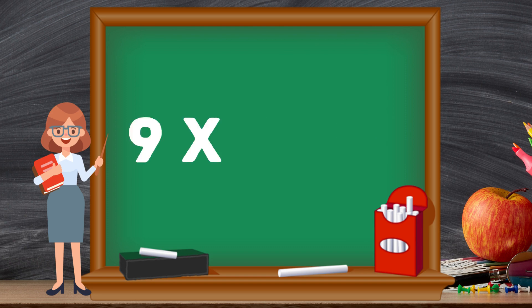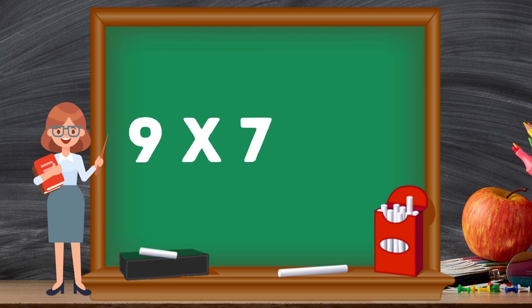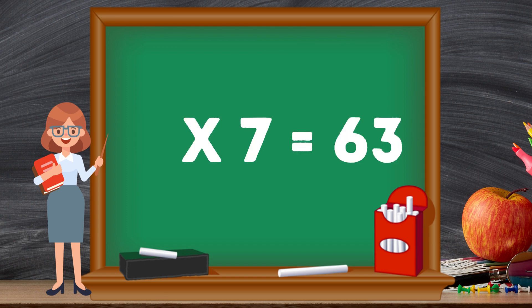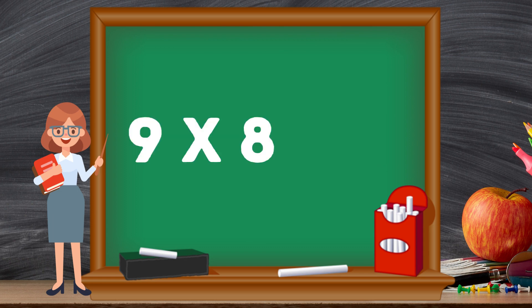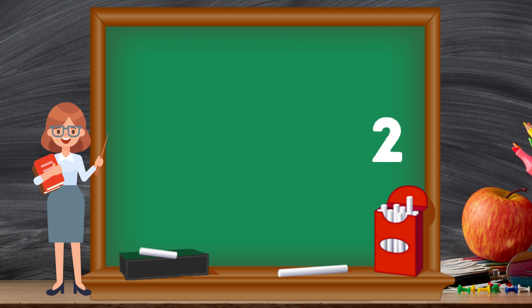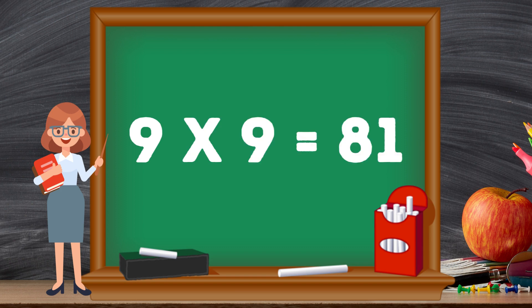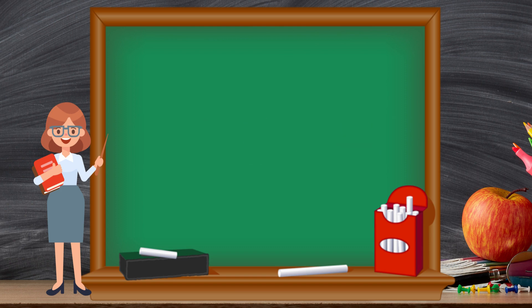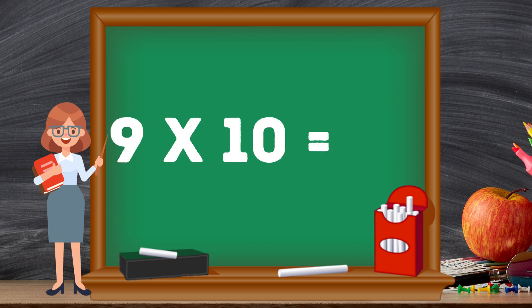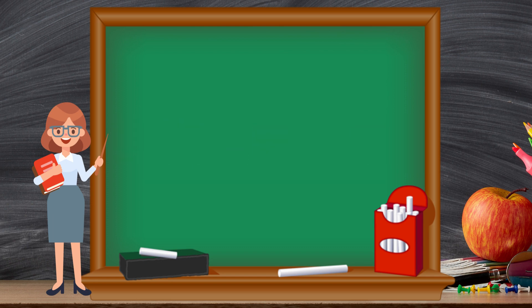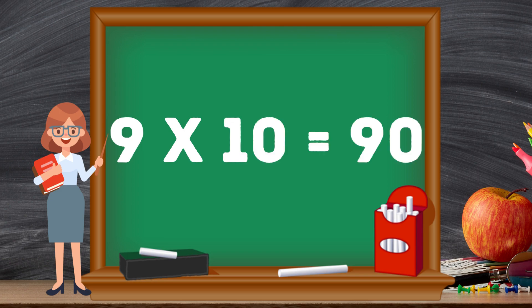9 6's are 54. Nine sevens are sixty-three. Nine eights are seventy-two. Nine nines are eighty-one. Nine tens are ninety.